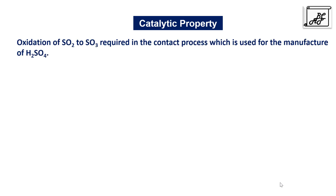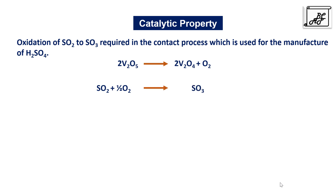For example, in the oxidation of sulfur dioxide to sulfur trioxide — an important process in the manufacture of sulfuric acid — vanadium pentoxide (V₂O₅) is used as a catalyst. V₂O₅ first dissociates into V₂O₄ plus oxygen; the oxygen reacts with SO₂ to give SO₃. The remaining oxygen reacts with V₂O₄ to regenerate V₂O₅. In this way the catalyst is regenerated in the reaction.